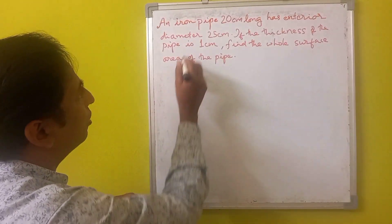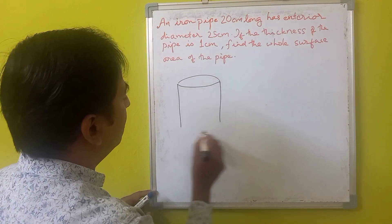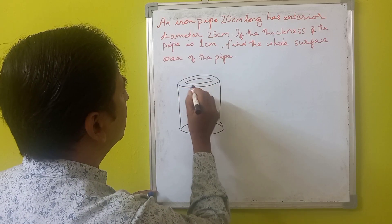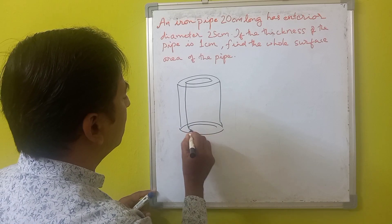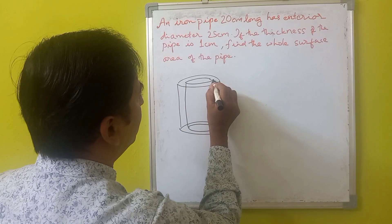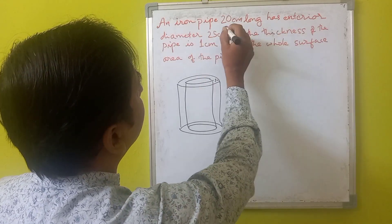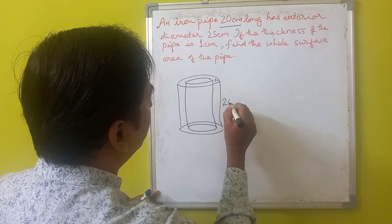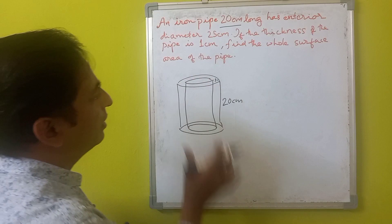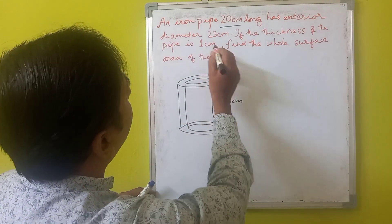So let us draw a rough figure of the pipe with the dimensions mentioned. Here it is a cylindrical pipe with a thickness of 1 centimeter. The thickness is 1 centimeter, as you can see here. It has a height of 20 centimeters — since it is 20 centimeters long, if you place it vertically that will become the height of the cylindrical pipe.